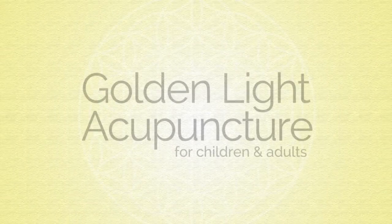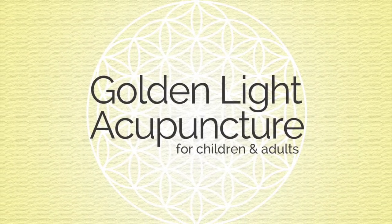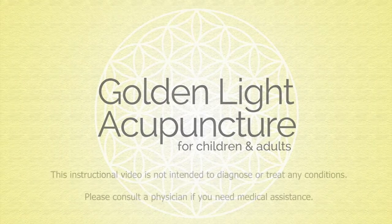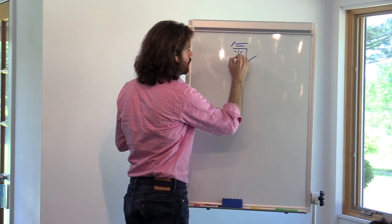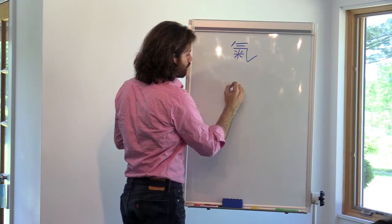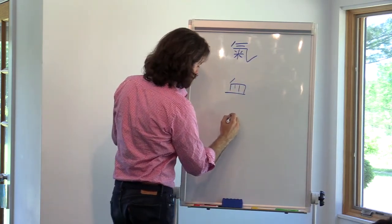Three substances, right? These are three types of resources that we have in the body. Qi, blood, and essences.